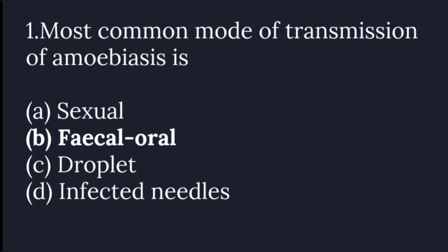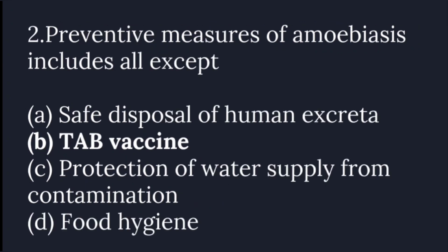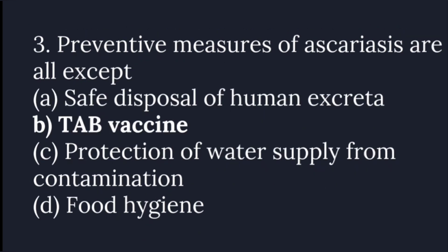The most common mode of transmission of MEBS is fecal-oral transmission. Prevention of MEBS includes all except the TAB vaccine. Preventive measures of Ascariasis are all except the TAB vaccine — the correct measures being safe disposal of human excreta, protection of water supply from contamination, and food hygiene.